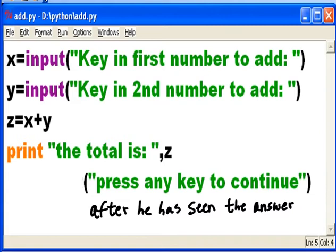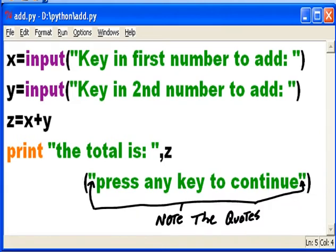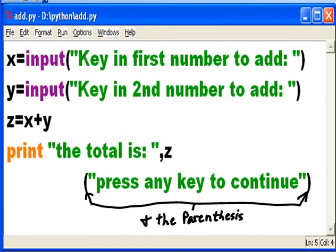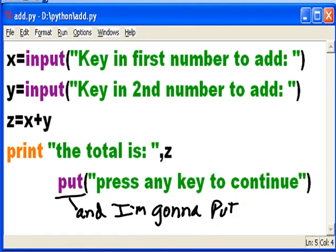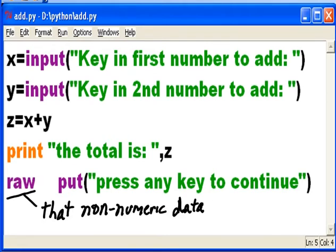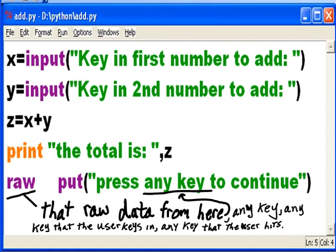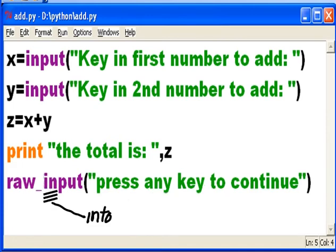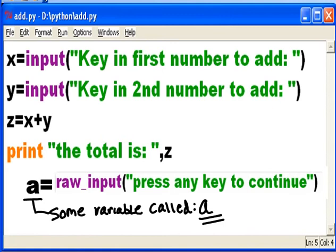Now I tell the user to do this: press any key to continue after he has seen the answer. Note the quotes and parentheses. And I'm going to put that non-numeric data from here, any key that the user keys in, any key that the user hits, into some variable called A.